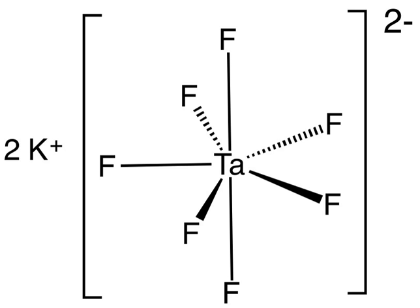Potassium heptafluorotantylate exists in at least two polymorphs. Alpha-K2TaF7 is the most common form and crystallizes in the monoclinic P21/c space group. The structure is composed of TaF7^2- units interconnected by potassium ions. TaF7^2- polyhedra may be described as monocapped trigonal prisms with the capping atom located on one of the rectangular faces. Potassium atoms are 9-coordinated and may be viewed as distorted monocapped square prisms.